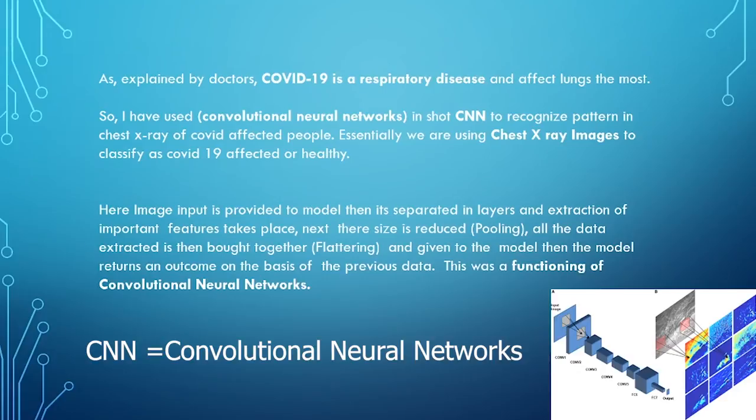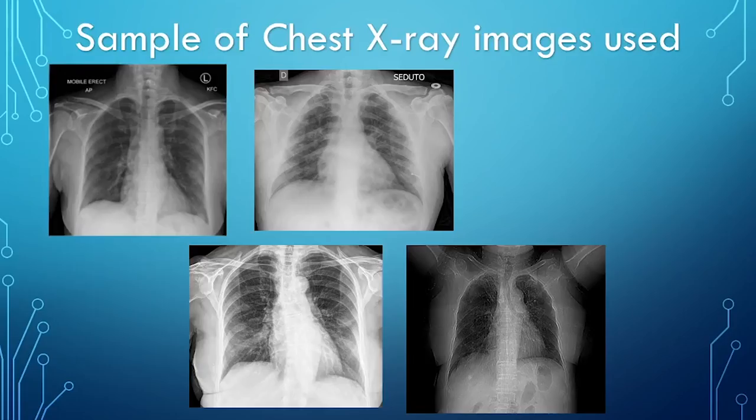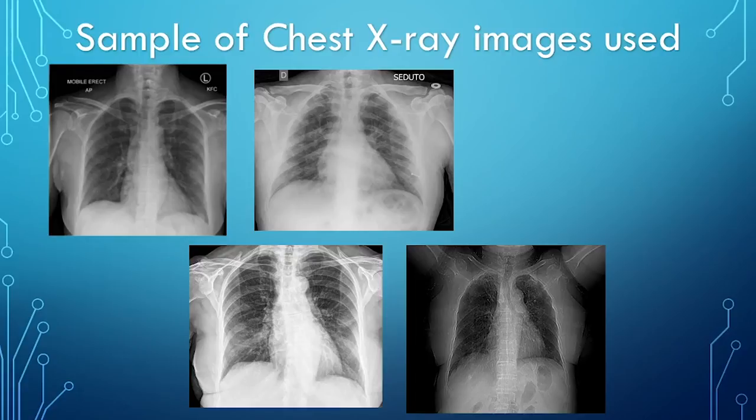This was the functioning of a CNN. This is a demonstration of the working of a CNN. As explained, these are samples of some chest X-ray images given to the model. Now let's look at the enormous benefits of the solution.